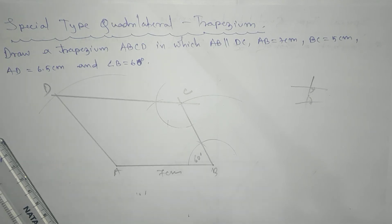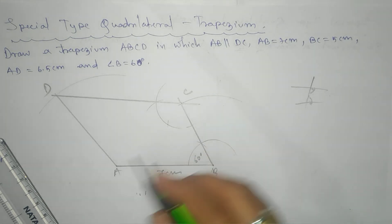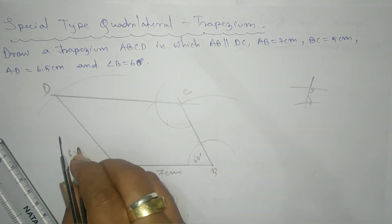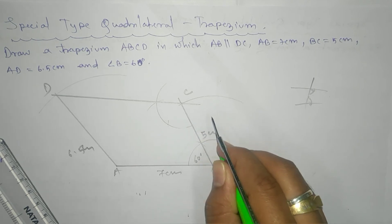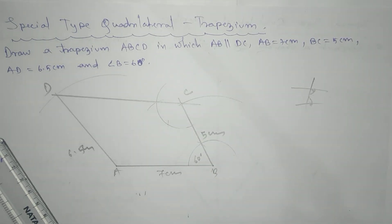where AB is parallel to CD and BC. So we'll mention here that is your 6.5 centimeter, this is your 5 centimeter. Okay, thank you.